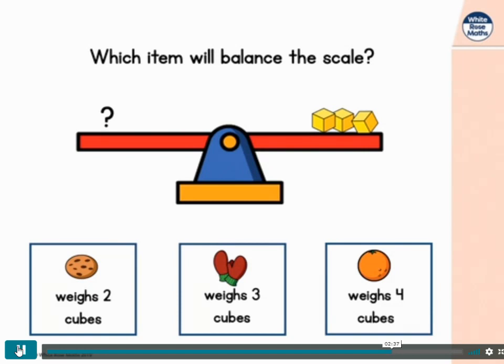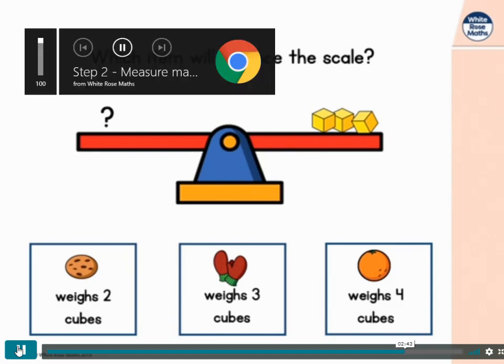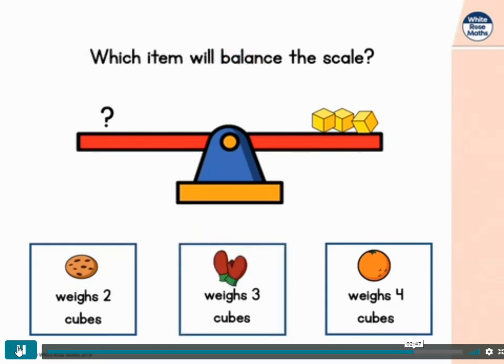The cookie that weighs two cubes, the mittens that weigh three cubes, or the orange that weighs four cubes. That's right. The mittens weigh three cubes, and there are three cubes on the other side of the scale. So the mittens will balance the scale.